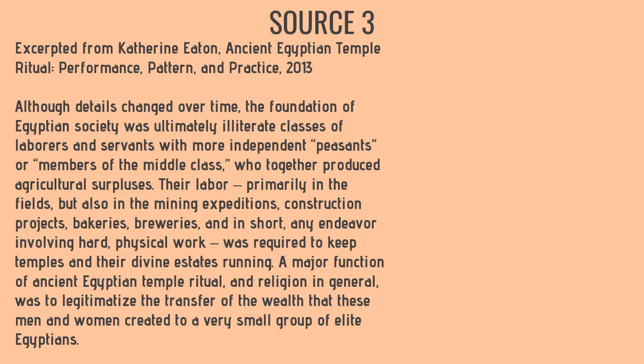We're looking at two sources again today. Source 3 is an excerpt from Catherine Eaton, Ancient Egyptian Temple Ritual Performance Pattern and Practice, published in 2013. It says the foundation of Egyptian society was ultimately illiterate classes of laborers and servants with more independent peasants or middle-class members who together produced agricultural surpluses. Their labor — in the fields, mining expeditions, construction projects, bakeries, breweries — was required to keep temples and their divine estates running. The temples are where these social elites live. A major function of ancient Egyptian temple ritual was to legitimize the transfer of wealth to a very small group of elite Egyptians.